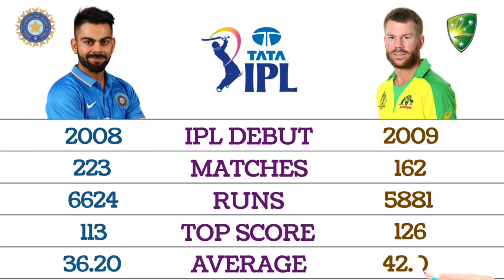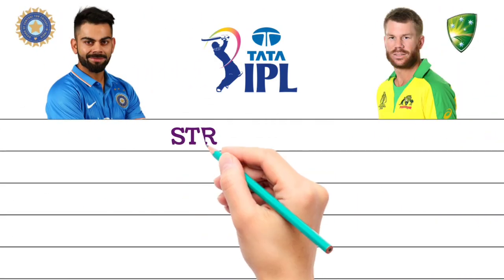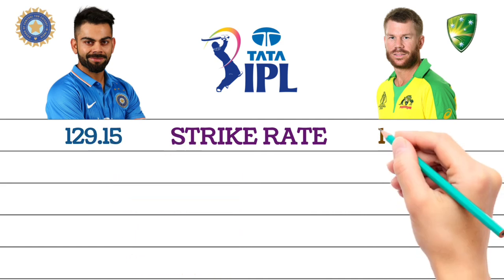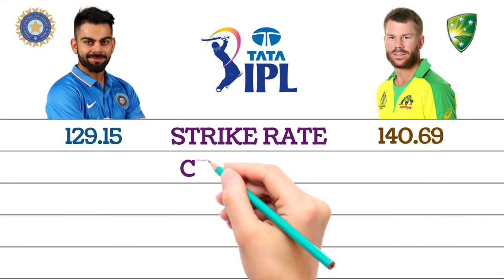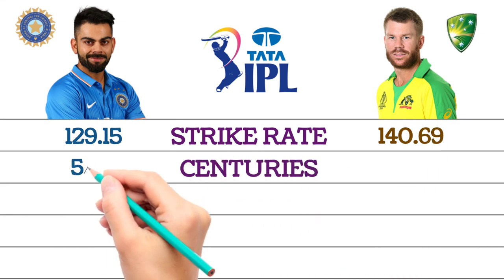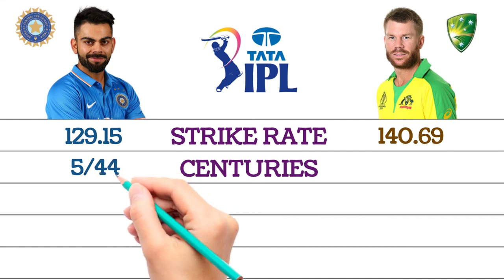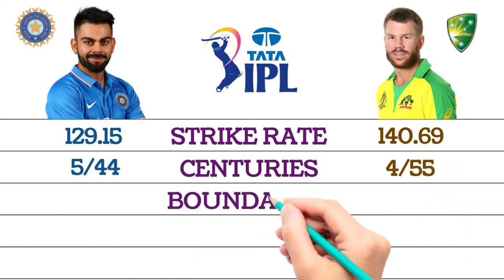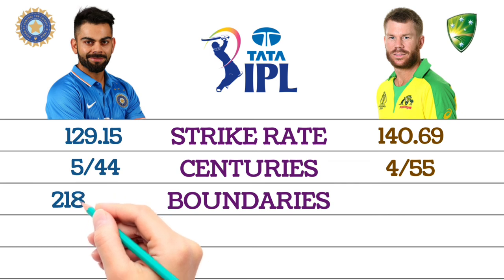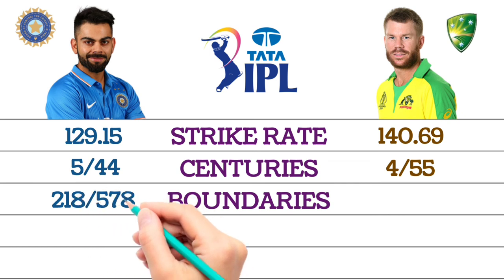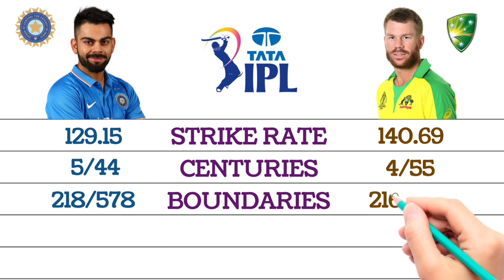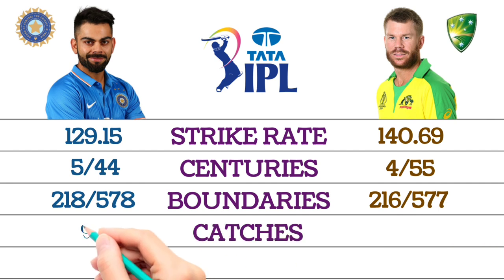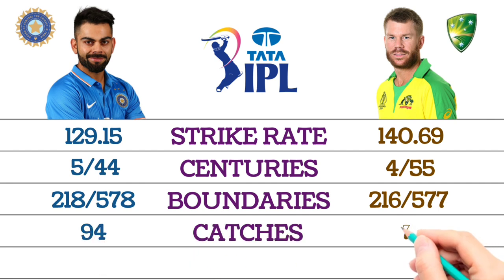IPL average: Virat Kohli 36.20, David Warner 42.01. Strike rate: Virat Kohli 129.15, David Warner 140.69. Centuries: Virat Kohli 5 centuries and 44 half-centuries, David Warner 4 centuries and 55 half-centuries. Boundaries: Virat Kohli 218 sixes and 578 fours, David Warner 216 sixes and 577 fours. Catches: Virat Kohli 94, David Warner 71.